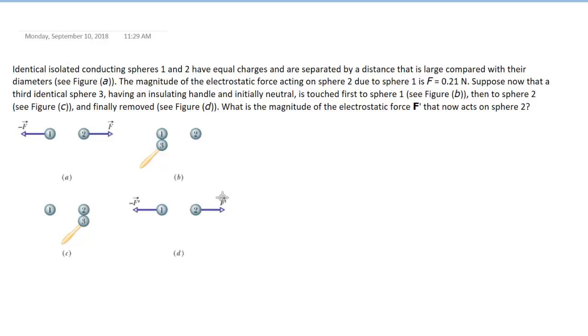If you haven't done so yet, make sure you pause the video and try to answer the question on your own first before listening on. We are told in the beginning that we have isolated conducting spheres labeled 1 and 2 that have equal charges.